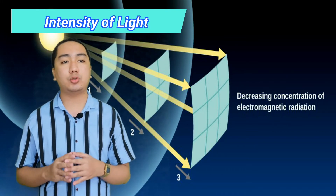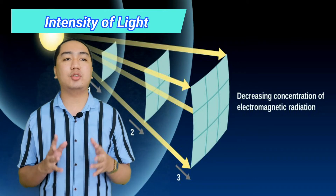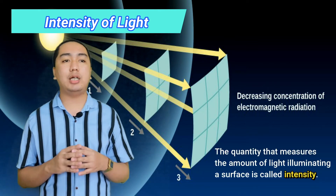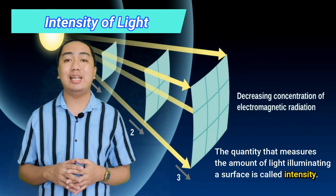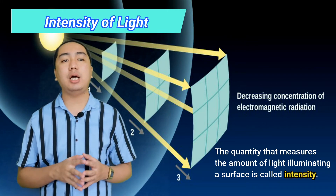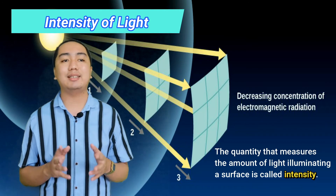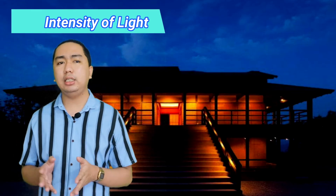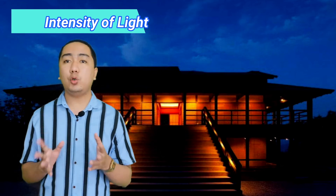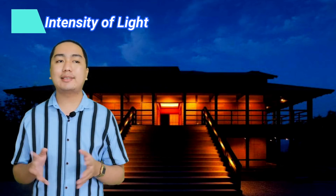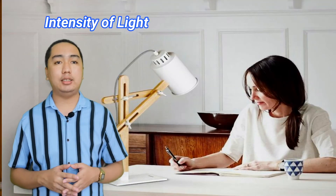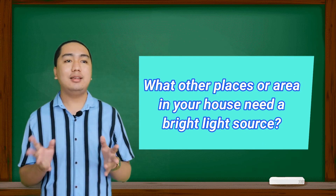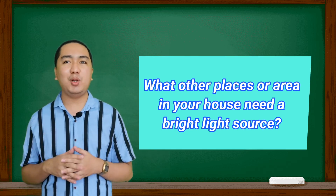As the distance from the source increases, light spreads out and becomes dimmer. The quantity that measures the amount of light illuminating a surface is called intensity. The intensity of light depends on the number of photons that pass through a certain area or space. In your house, you usually control the intensity, color, and area of spreading of light to get the effect you want. For example, bright lamps for reading are placed on your study table, but dim light is used in a bedroom. What other places in your house need a bright light source? Comment your answers below.